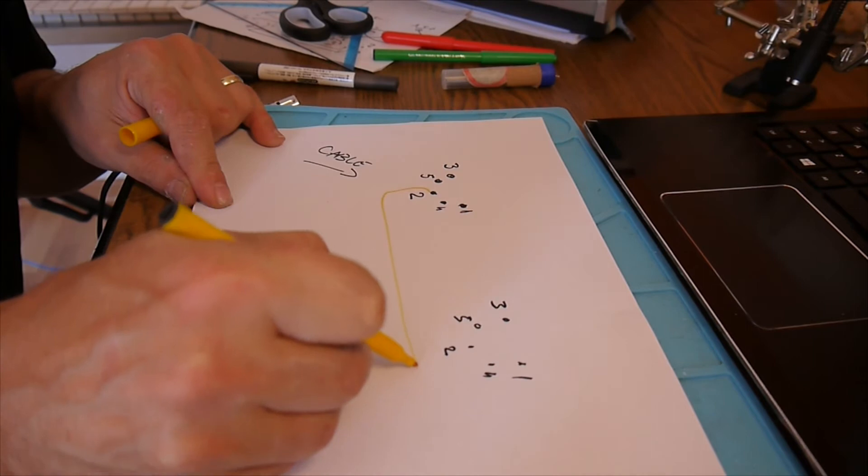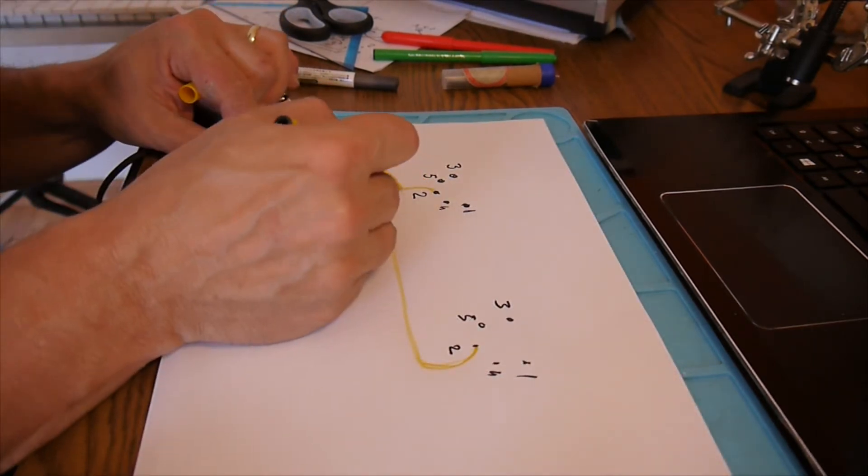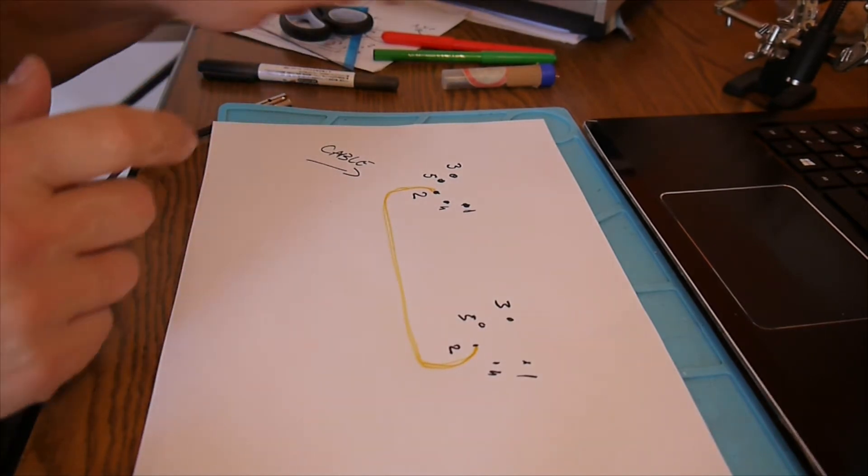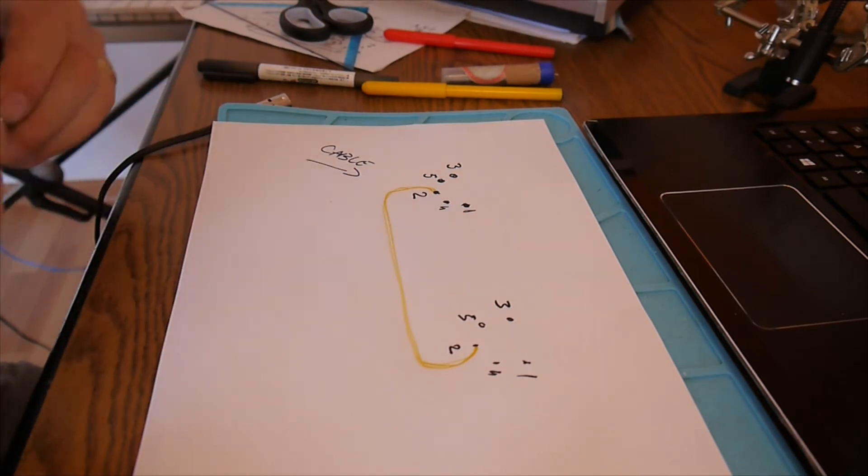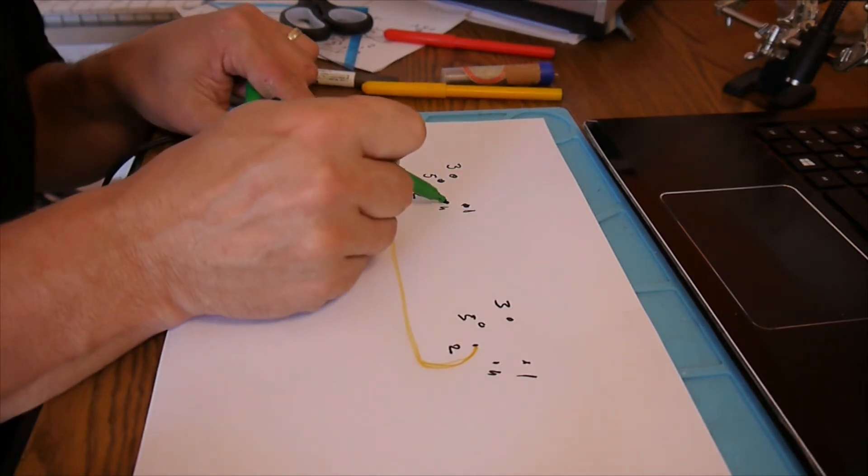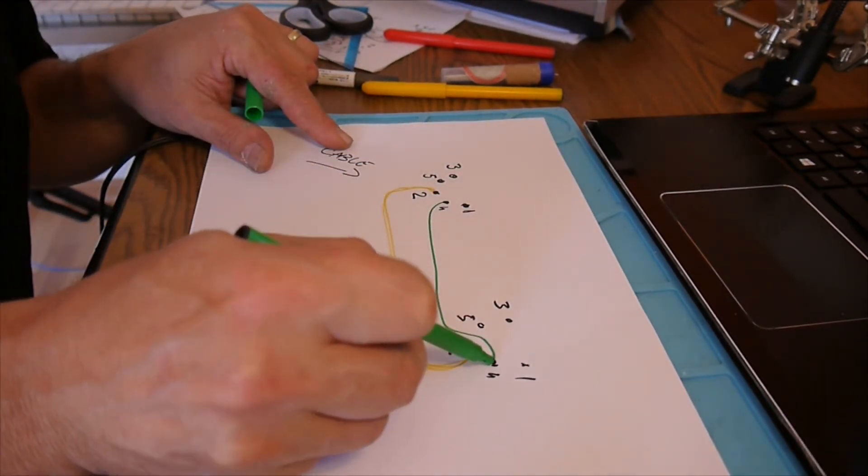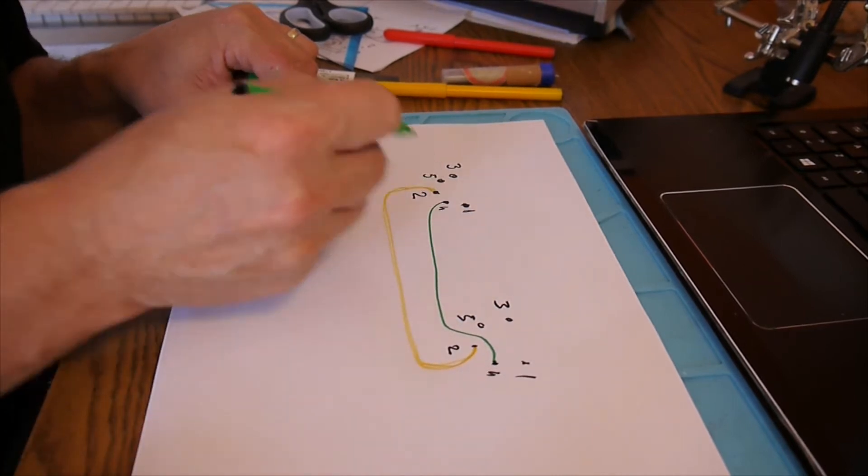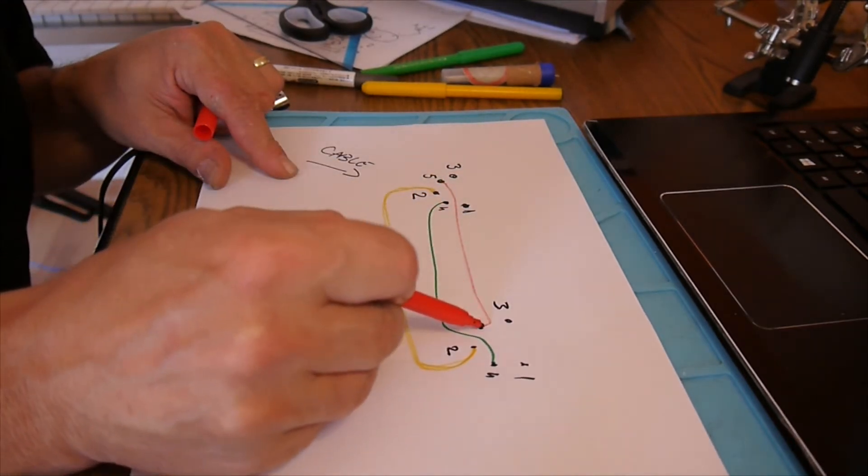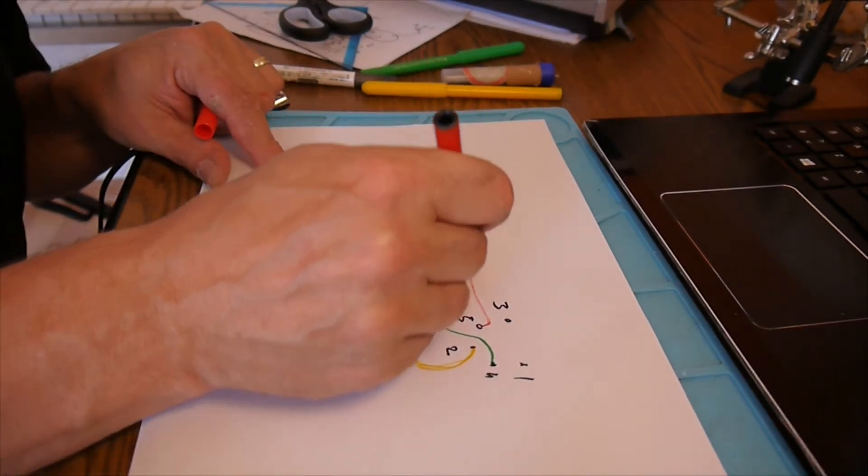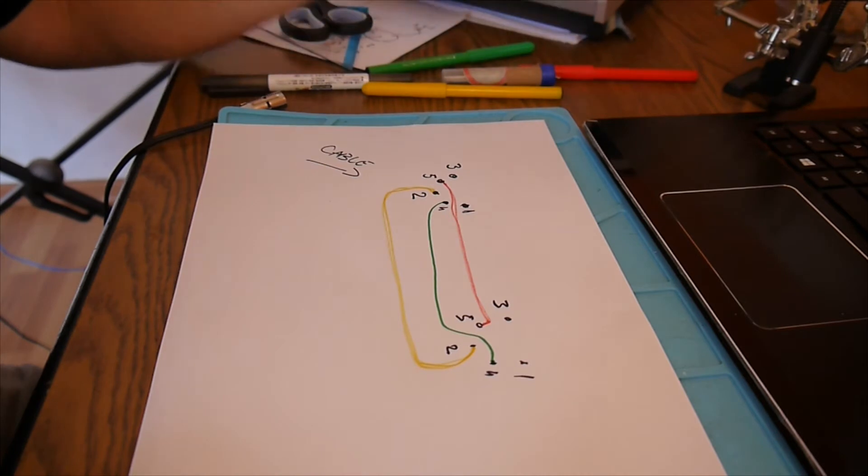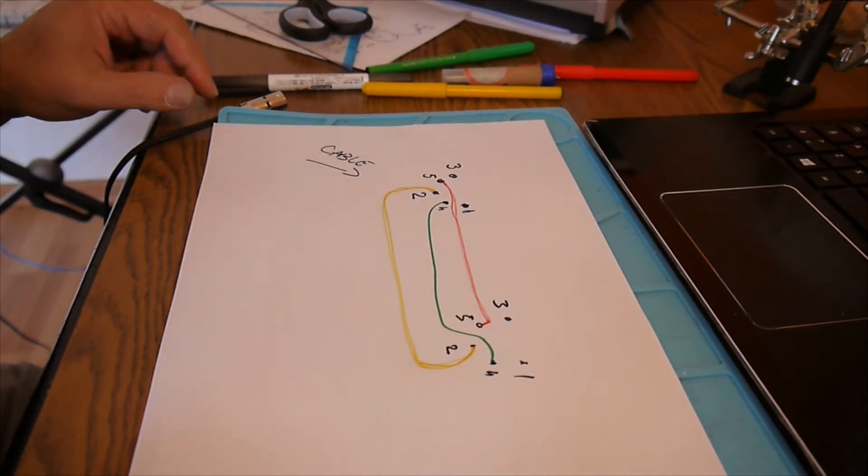And then the connection is very easy. Of course we're gonna have the shield from number two going to number two, shielding all the wires inside so we don't really have any kind of current or transmission here. And then of course number four goes to number four, number five is going to number five.